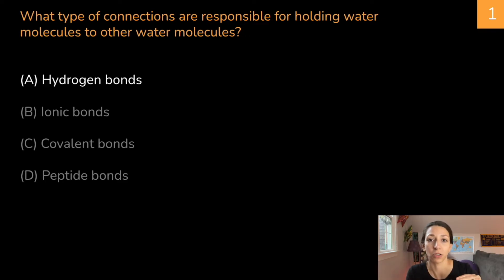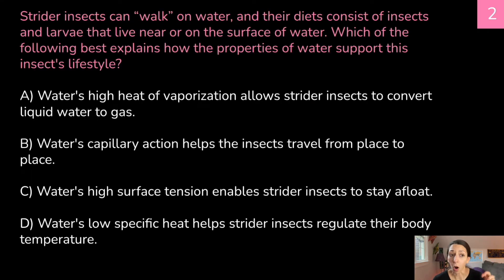Strider insects can walk on water and their diets consist of insects and larvae that live near the surface or on the surface of the water. Which of the following best explains how the properties of water support this insect's lifestyle? A) water's high heat of vaporization allows strider insects to convert liquid water to gas, B) water's capillary action helps the insects travel from place to place, C) water's high surface tension enables strider insects to stay afloat, or D) water's low specific heat helps strider insects regulate their body temperature.